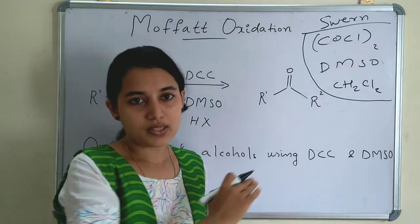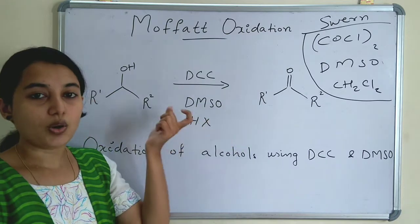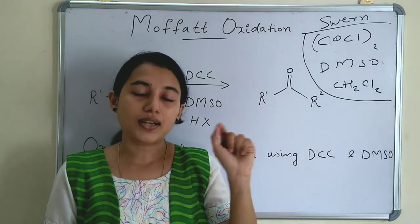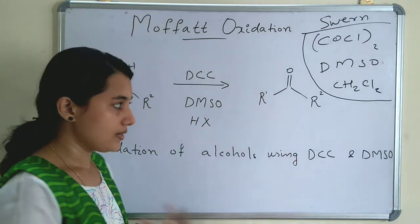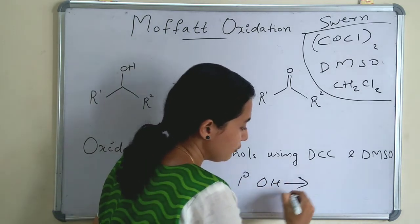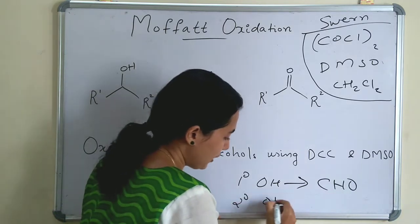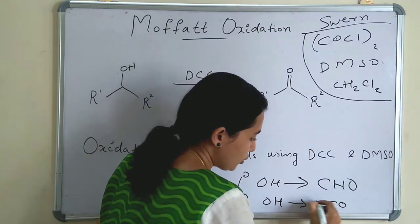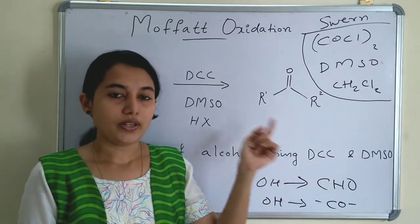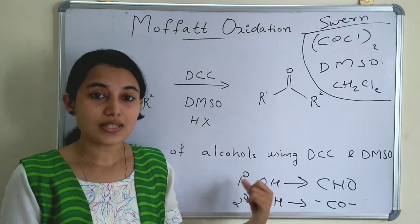There are some similarities between Swern Oxidation and Moffat Oxidation. In Moffat Oxidation, the oxidation of alcohol leads to carbonyl compounds. Primary alcohol gives aldehyde and secondary alcohol gives ketone. So primary OH is converted to CHO and secondary OH is converted to a ketone.